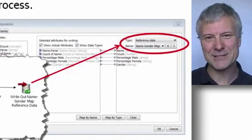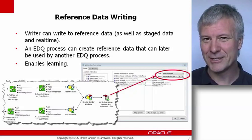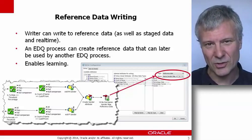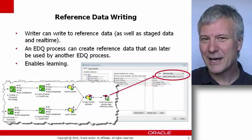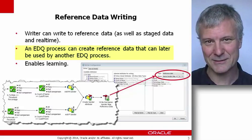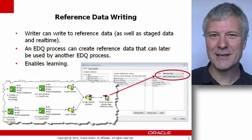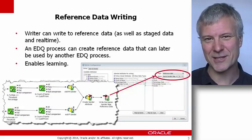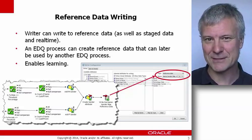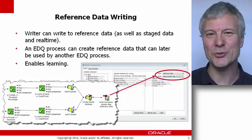You can then maintain that reference data within EDQ and edit it manually if you want to. You can keep on updating your reference data by running your process again with slightly different variables or different incoming data. The reference data you create can then be used in another EDQ process to check the working data or to enhance it. What I want to do now is show you one or two examples of how you might use this reference data writing functionality to automatically create reference data, which can then be maintained in EDQ and used in other EDQ processes.